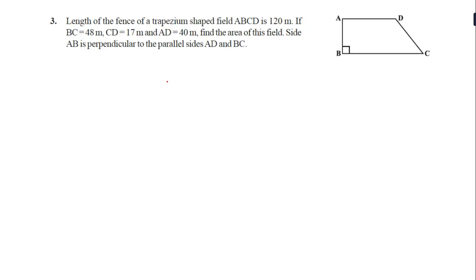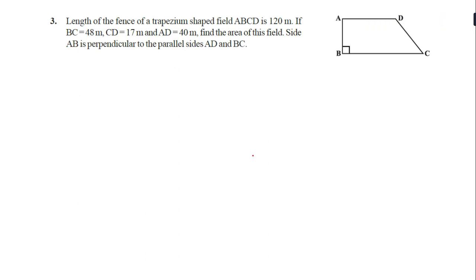Now question number 3. Each question, if you write it the proper way using the formula, we can get the answer. What is given: the length of the fence of field ABCD is 120 meters. BC is 48 meters, CD is 17 meters, AD is 40 meters. We have to find out AB first, then find the area of this field.